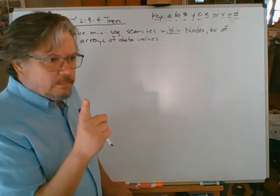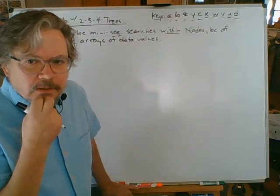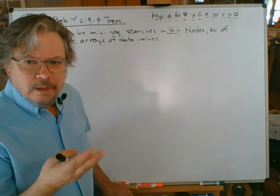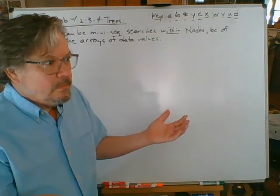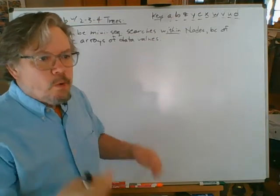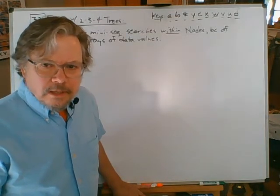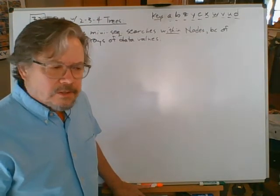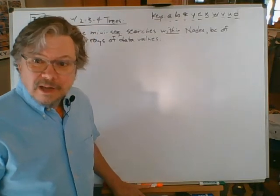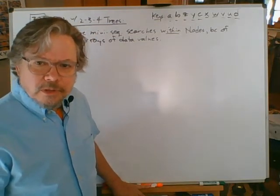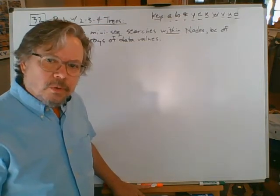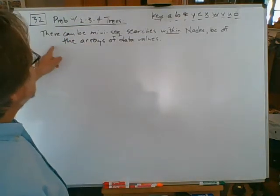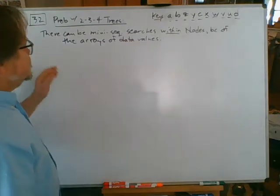A 2-3-4 tree is a special case of what's called a B tree. In a B tree you do have arrays of data elements rather than single data elements. You might think why would we ever want more than three? Actually we might want several more than three. B trees are used in file systems a lot - the Microsoft file system, for example, is B tree based. A 2-3-4 tree is really just a special case of a B tree. Anyway - there can be many sequential searches within nodes because of the arrays of data values.